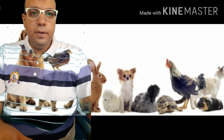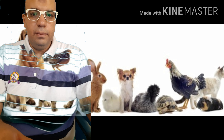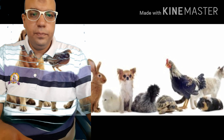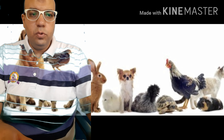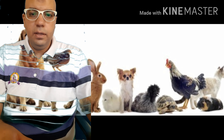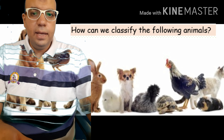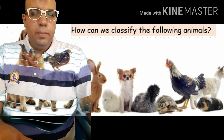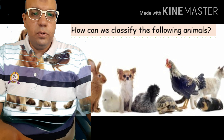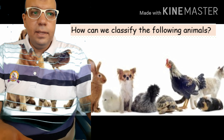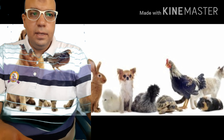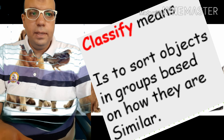How can we classify the following animals as you see here in the figure? We can sort animals into groups based on how they are alike. By sorting different things according to how they are alike, I can classify them. The word classify means to sort objects into groups based on how they are similar.